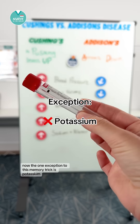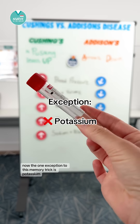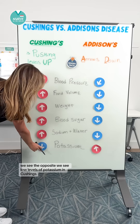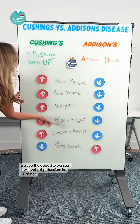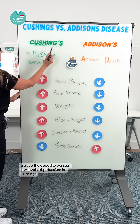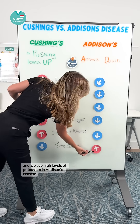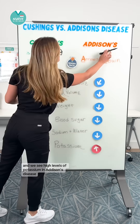The one exception to this memory trick is potassium — we see the opposite. We see low levels of potassium in Cushing's, and we see high levels of potassium in Addison's Disease.